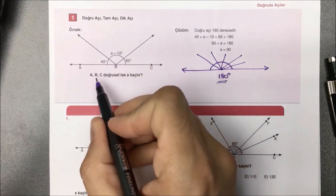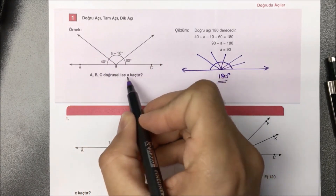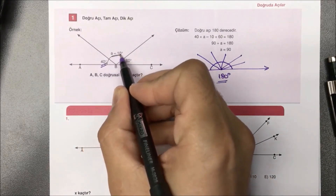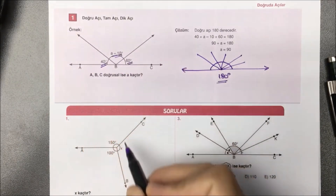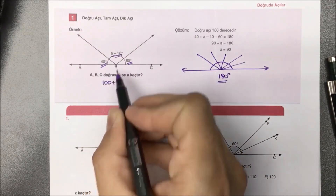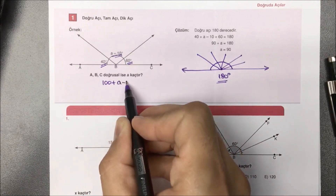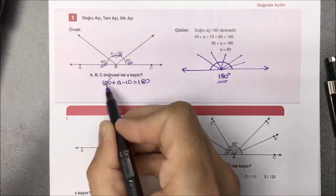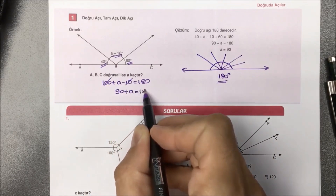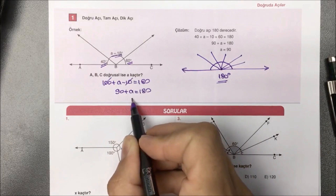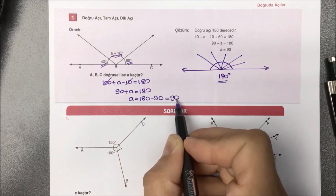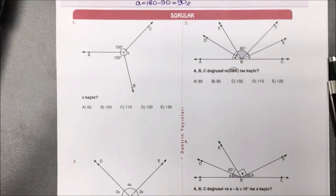Sorumuza bakacak olursak, ABC doğrusalsa A kaçtır diye sorulmuş. Yapmamız gereken verilen açıların hepsini toplayıp sonucunu 180'e eşitlemek. 40 var, 60 da var, 100 yapar. Devamında A-10 var. 100 artı A eksi 10 eşittir 180 diyeceğiz. 100 eksi 10 yani 90 artı A eşittir 180. 90'ı karşı yatarsak, 180'den 90'ı çıkartacağız. Aradığımız yanıt 90 derece olarak bulunmuş olur.